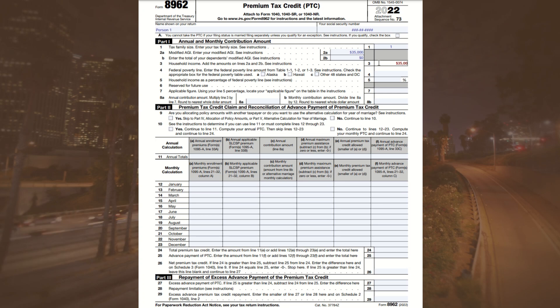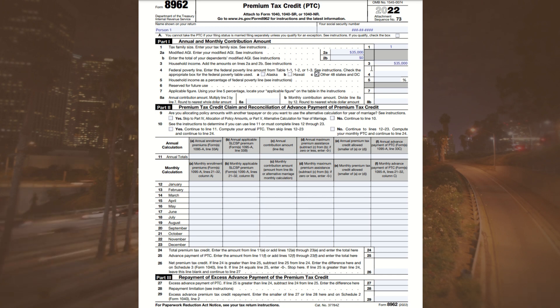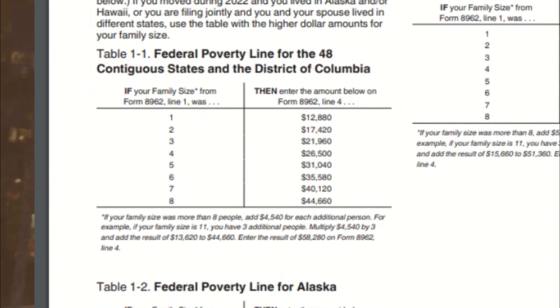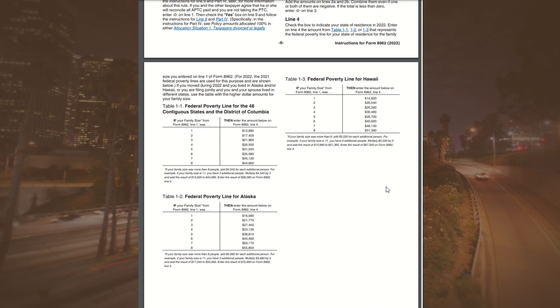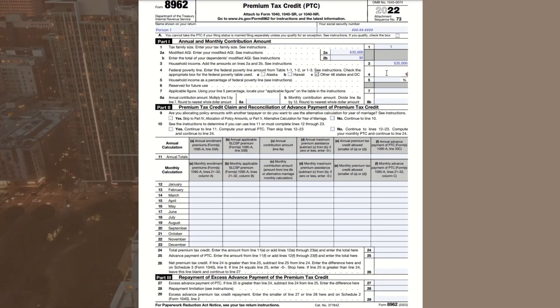Line 4 asks where you live — Alaska and Hawaii have different federal poverty calculators, but for the contiguous 48 states we check that box. Looking at the table in the instructions, the federal poverty line for the lower 48 states for a family of one is $12,880. So $12,881 means you are not considered poor by the government, and $12,879 means you are. We enter $12,880 on Line 4.